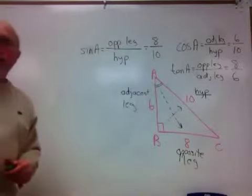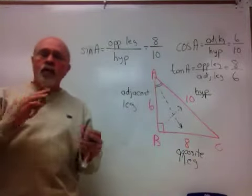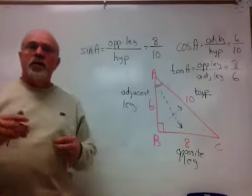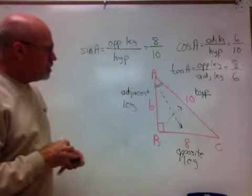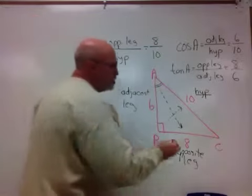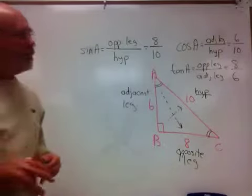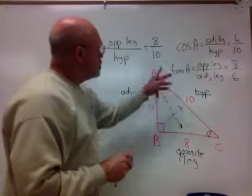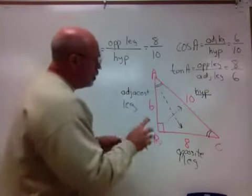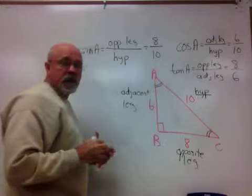Now, again, hypotenuse will never change in any of these problems, so it's where you want to start. What will change from problem to problem is which leg will be the opposite. So let's redo those three ratios, looking this time at angle C being our angle, as opposed to angle A. Notice that hypotenuse never changes. Well, since hypotenuse doesn't change, the only thing that will change if I'm down here at angle C is what's opposite and adjacent.